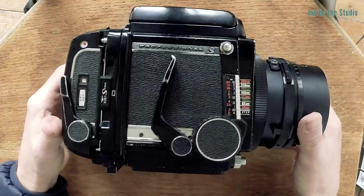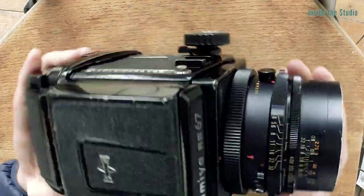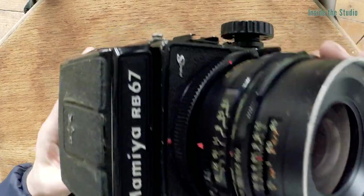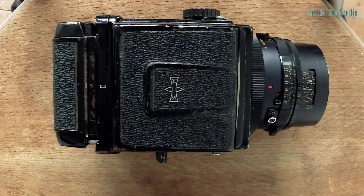So this is the Mamiya RB67, and it's a professional medium format film camera. Now I used this to shoot my beekeeper portraits many years ago and it did the job really well.